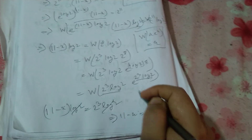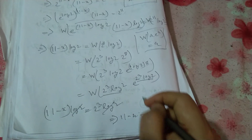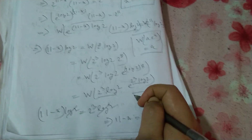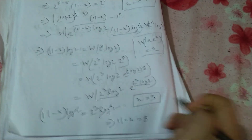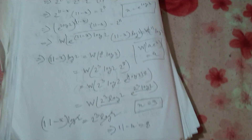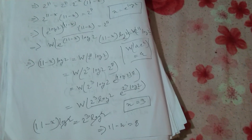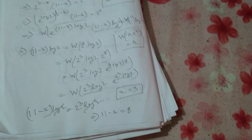So x is equal to 11 minus 8, which gives x equals 3. Please check my whole work. Thanks for watching.